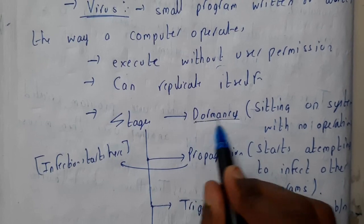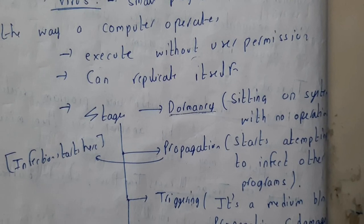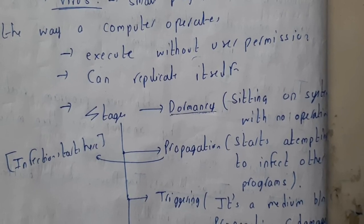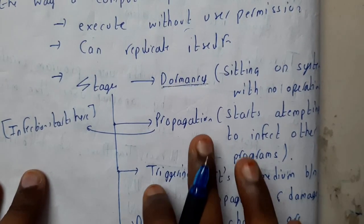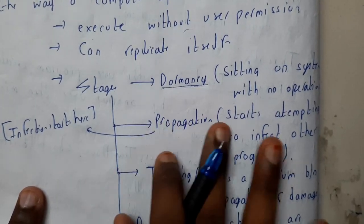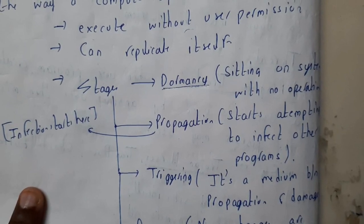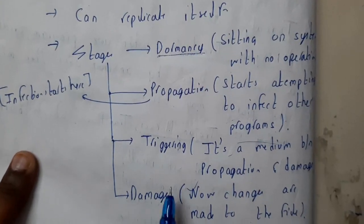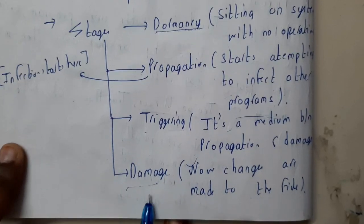The first stage is dormancy — the virus initially stays in the system, monitors everything, does not react or perform any operation; it just sits at some random place and monitors. The second stage is propagation, where the infection starts. The virus tries to attach to or attack some programs, attempting to interact with other programs or interfaces.